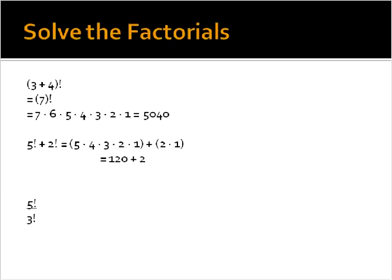When we have them in a fraction form, we can write them out. The factorial of 5 is 5 times 4 times 3 times 2 times 1, and 3 is 3 times 2 times 1. And then we would cancel out any like terms. So in this case, we'd cancel out the 3, 2, 1 on both the top and bottom. And we would just have 5 times 4, which is equal to 20.